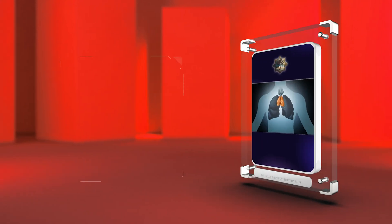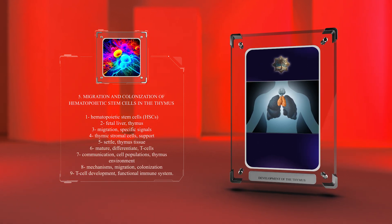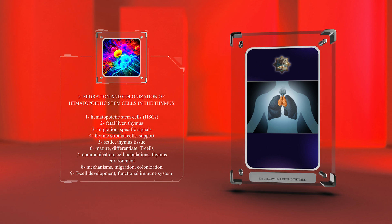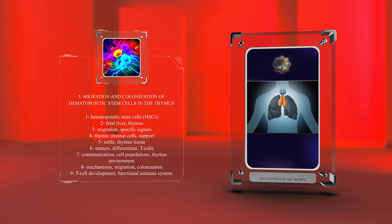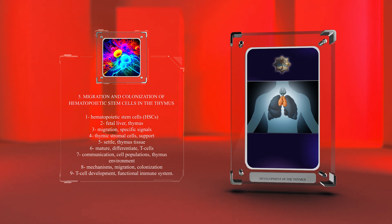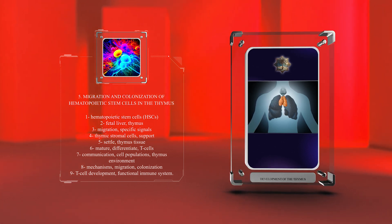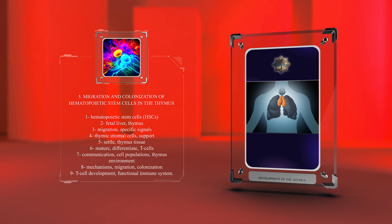Hematopoietic stem cells (HSCs), which develop into different blood cells including T-cells, originate in the fetal liver and then migrate to the thymus, directed by specific signals. Once in the thymus, HSCs interact with thymic stromal cells, which support the thymus, allowing HSCs to settle and become part of the thymus tissue. Within the thymus, HSCs further mature and differentiate into T-cells.